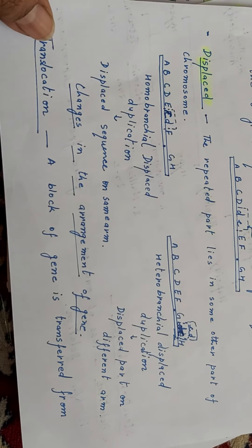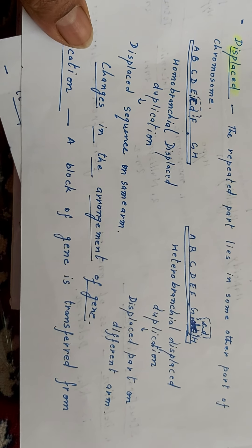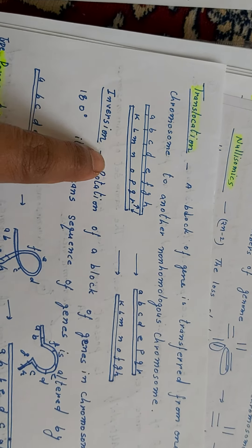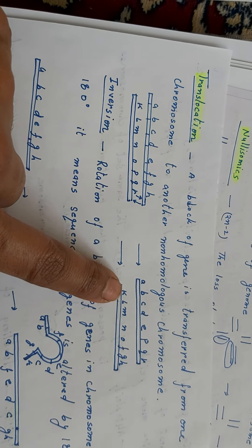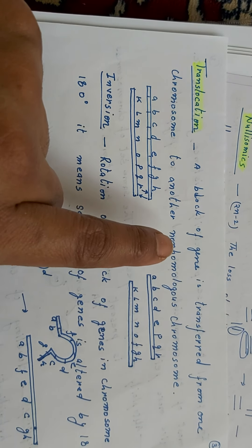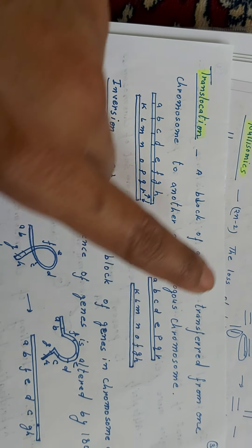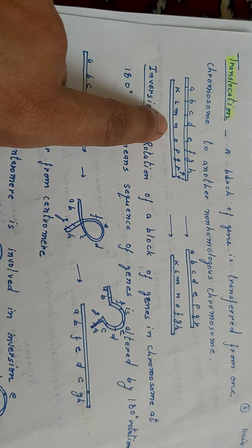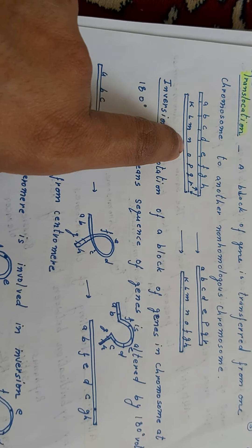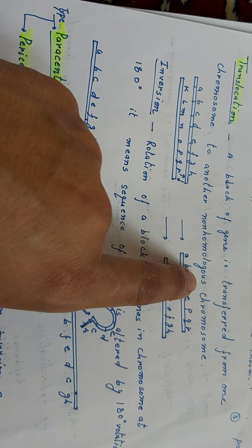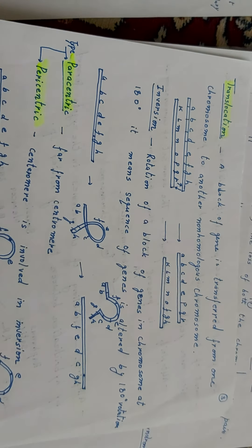Next topic is change in the arrangement of genes. First is translocation: a block of genes is transferred from one chromosome to another non-homologous chromosome. The donor chromosomes are non-homologous. A part — QR — goes from one chromosome to the other, and GH comes from there to here. This is translocation.